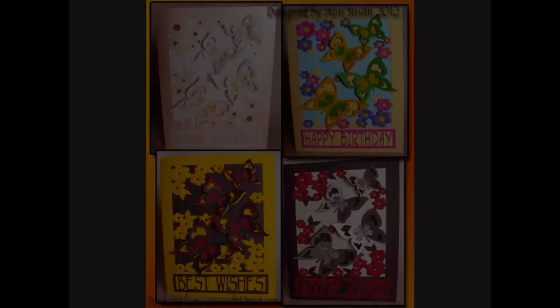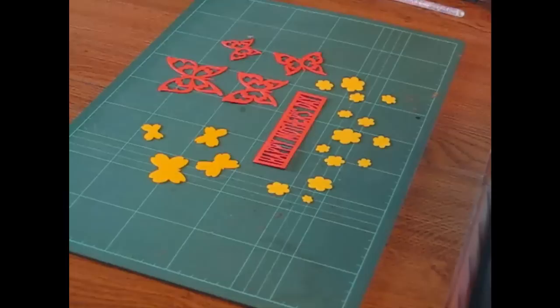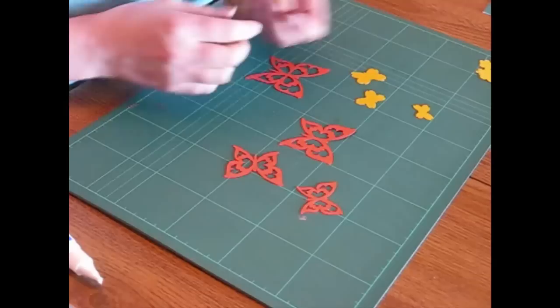The first file includes the main body of the card and the liner. The second file includes the cut out butterfly wings and also the 3D flowers and the sentiment panels.